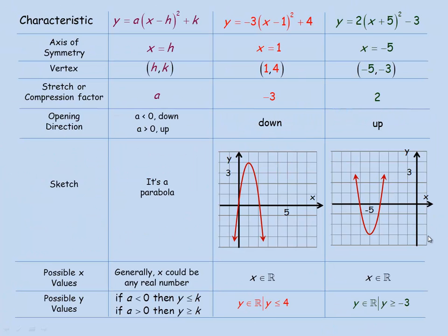This last page is a summary of vertex form. The equation is y equals a times (x minus h) squared plus k, and these are all the characteristics. The axis of symmetry is always x equals h. The vertex is at (h, k). The value a is the stretch or compression factor: if a is less than 0 the parabola opens down; if a is greater than 0 it opens up. The shape is a parabola — a specific one can't be drawn without specific values for h, k, and a.